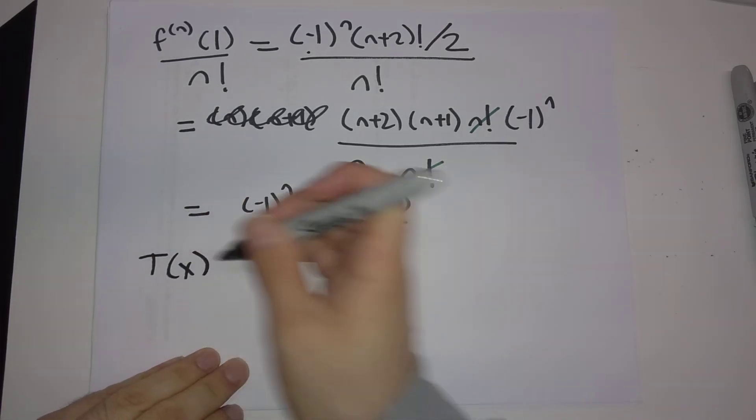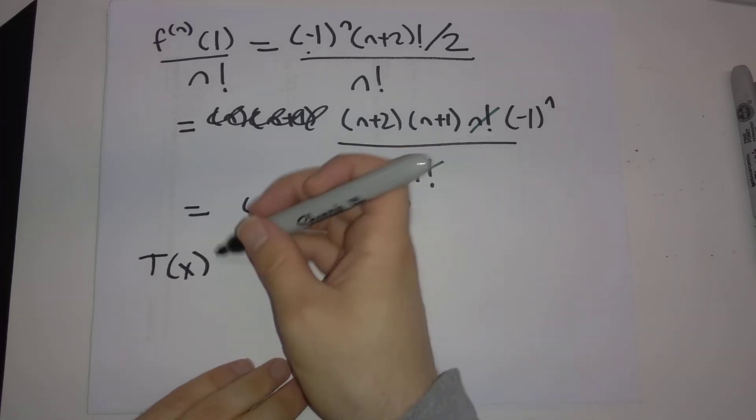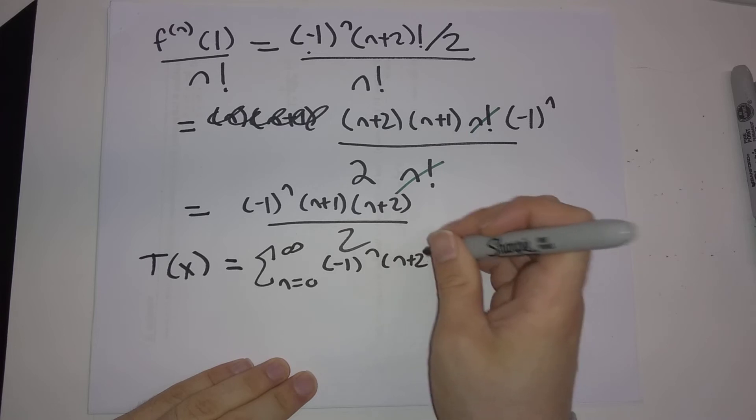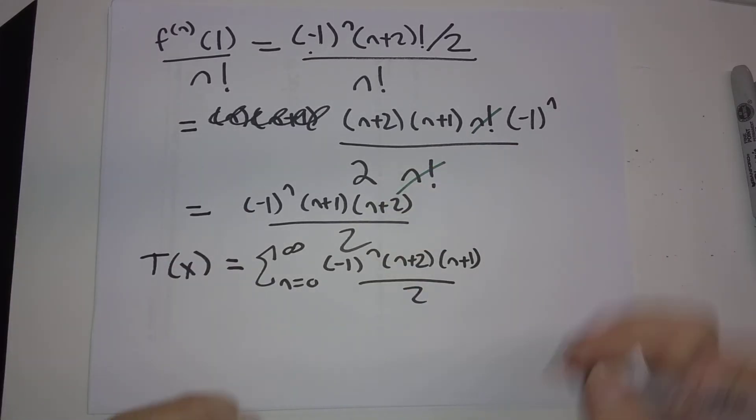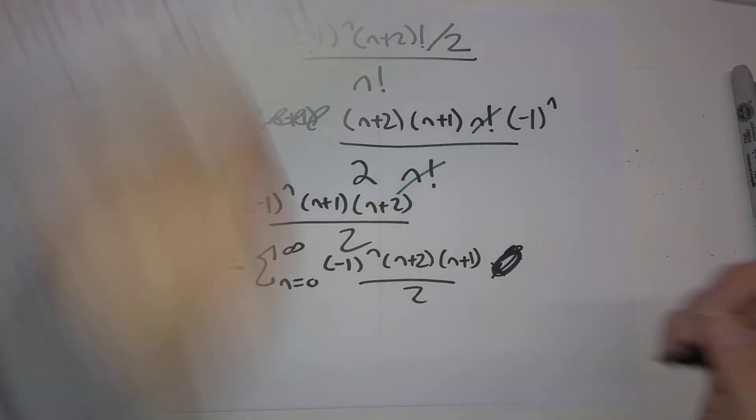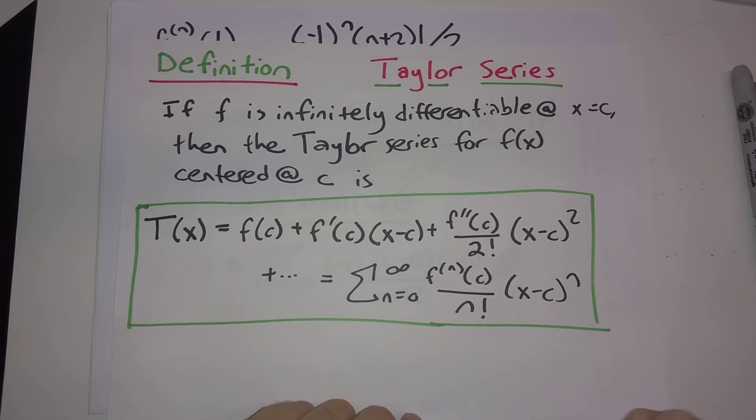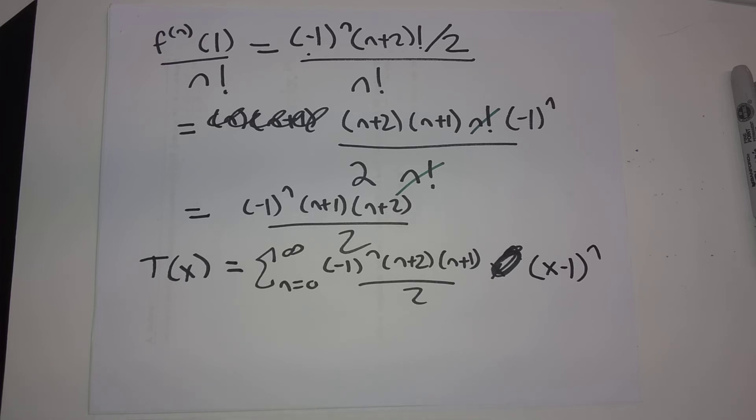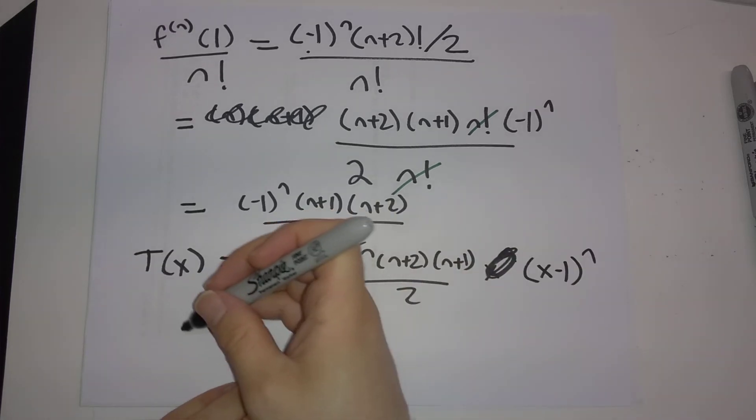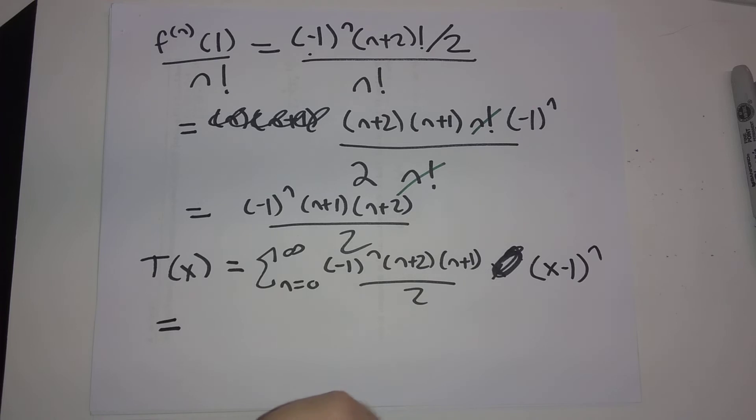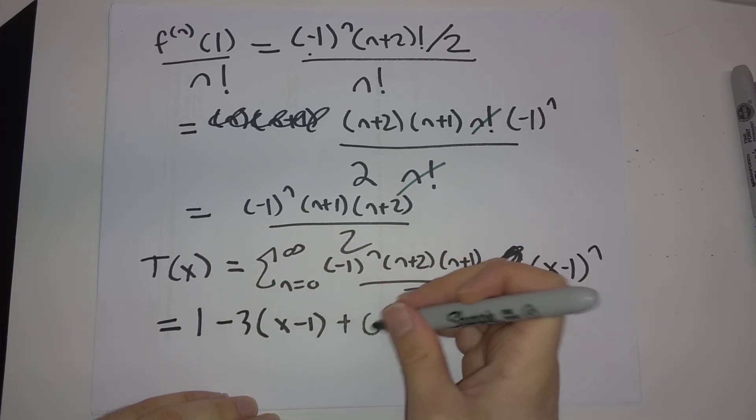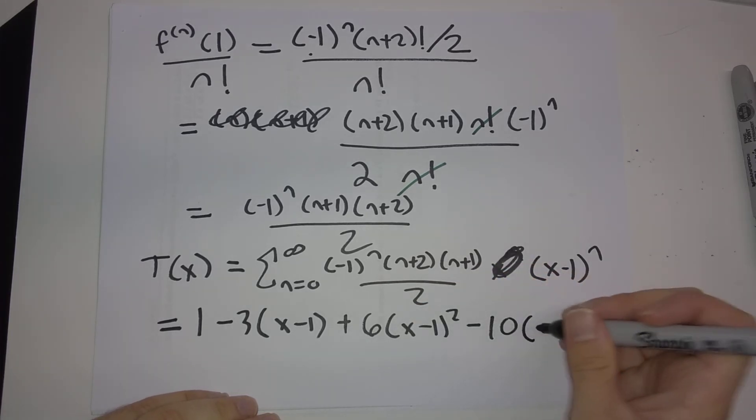And so our Taylor series for f of x centered at x is equal to 1 is going to be the sum from n from 0 to infinity of minus 1 to the n times n plus 2 times n plus 1 divided by 2. That's this, that's this that we just wrote down here. Don't forget the factor of, oops, I made a mistake. Not x to the n, but we are centering at c is equal to 1, so this needs to be x minus 1 to the n. It would be x to the n if we are centering at c is equal to 0.